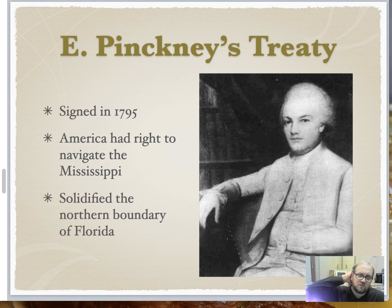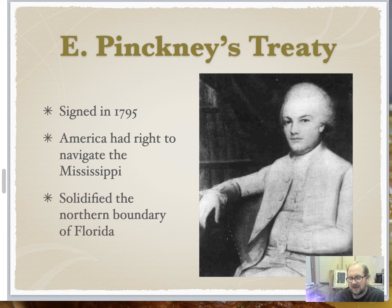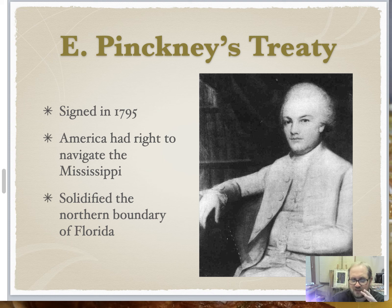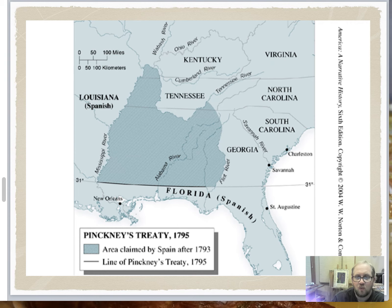A more successful treaty was Pinckney's Treaty, signed between Spain and America. America needed navigable rights on the Mississippi River — the mouth of the Mississippi was in New Orleans, which was owned by the Spanish. We brokered a deal with Spain gaining access to the Mississippi River, in exchange giving up our claims to Florida.